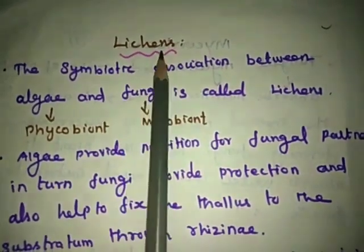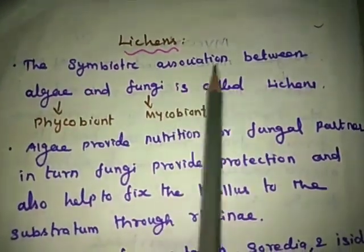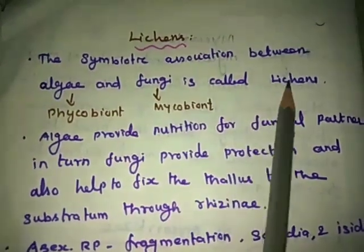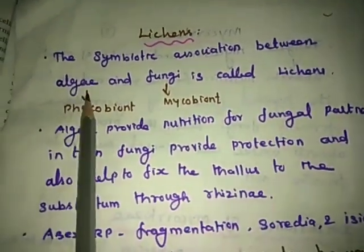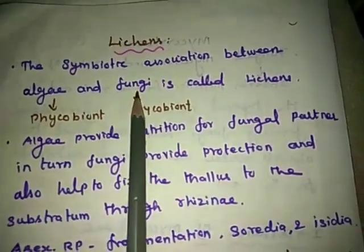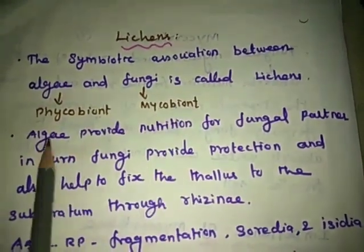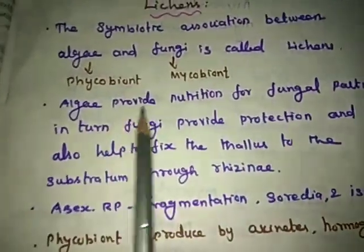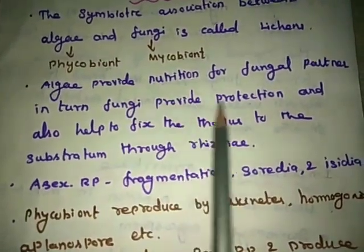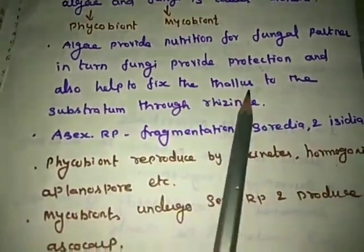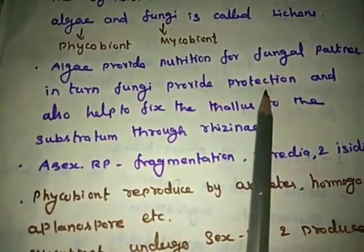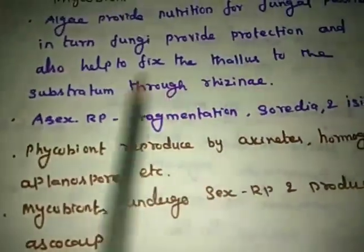The symbiotic association between algae and fungi is called lichen. The algal partner is called phycobiont or photobiont, and the fungal partner is called mycobiont. The algae provide nutrition for the fungal partner, while in turn the fungi provide protection and help fix the thallus to the substratum through rhizinae.